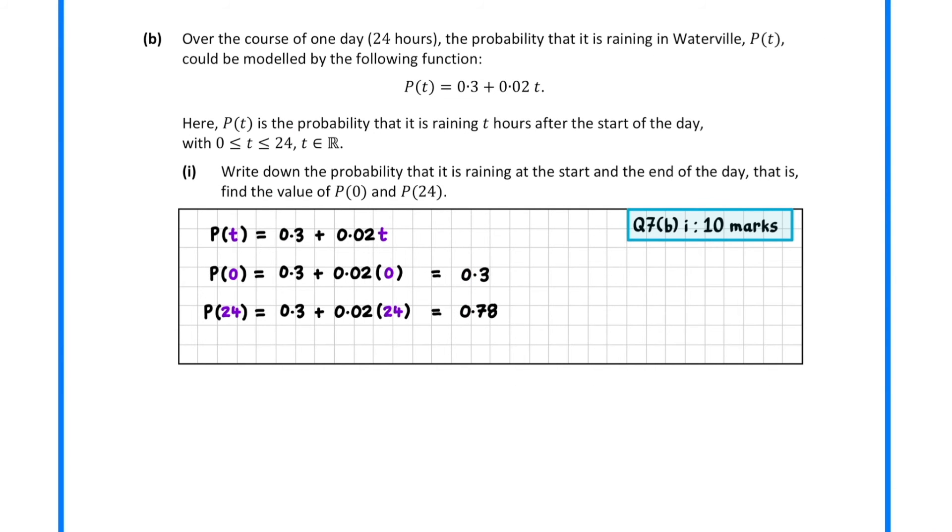In part B, we have a function P which tells us the probability it is raining t hours after the start of the day. In part 1, we are asked to find P(0) and P(24). For P(0), we sub in t equals 0 into our function definition, then calculate the answer. P(24) is similar, but this time we sub in t equals 24.